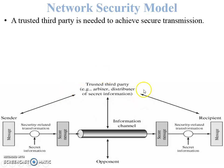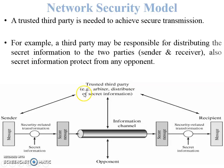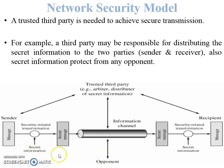Key distribution is done with the help of a trusted third party. For example, a third party may be responsible for distributing the secret information to the sender and the receiver. The secret information must be protected from any opponent — hacker or attacker. If the attacker obtains the secret information, they can capture the secure message from the information channel and convert it back into the original text message.